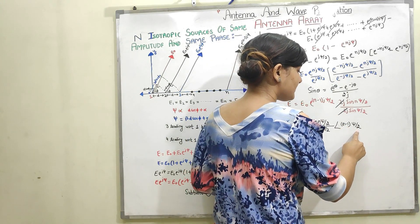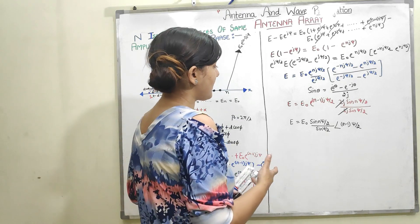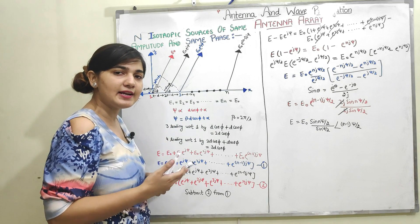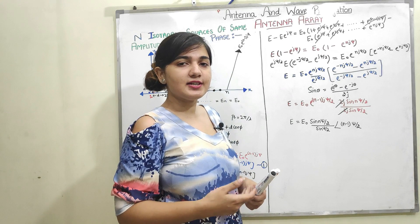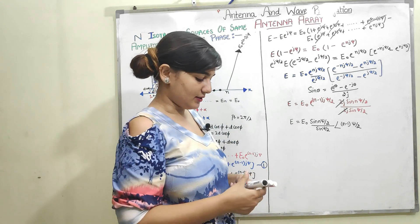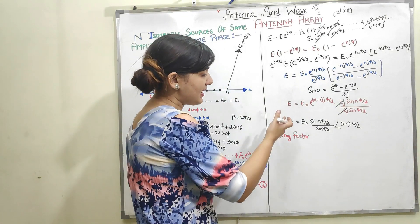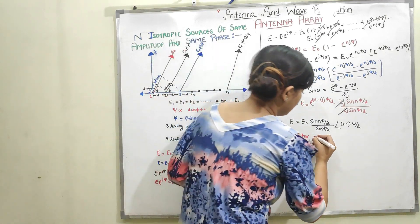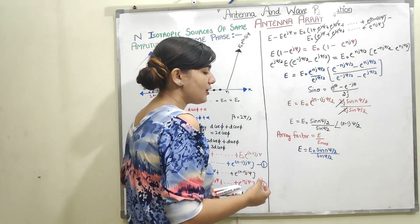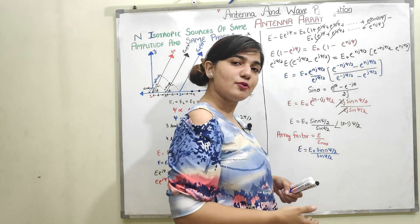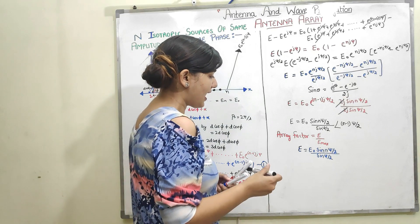This gives the final electric field from an N-point isotropic antenna array of same amplitude and same phase. Now I am interested in finding the array factor, which is defined as the electric field divided by its maximum value. When I put psi = 0 into the formula, I get a 0/0 form, so I apply L'Hôpital's rule.